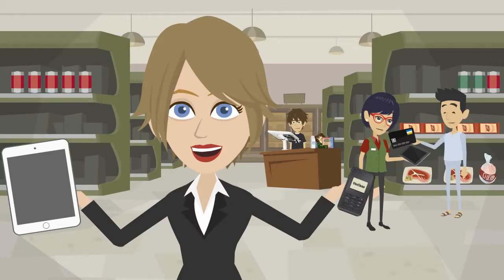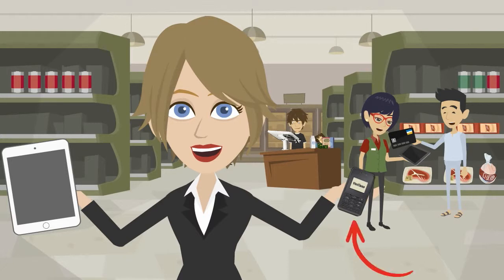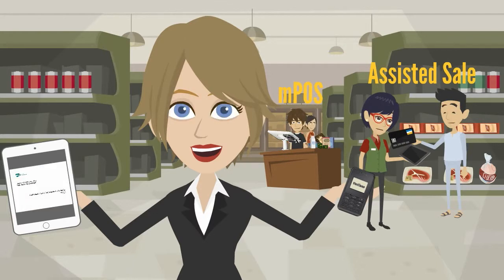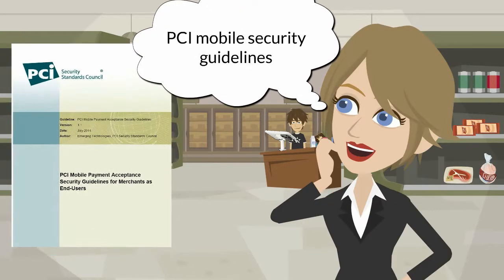Paula's challenge is to implement a mobile solution for payment and customer engagement. She has chosen a mobile payment device and a tablet that she needs to combine to enable both Assisted Cell and MPOS applications. Paula is, of course, fully aware of the PCI DSS 3.2 standard, but she needs to learn more about mobile devices and finds the PCI Mobile Payment Acceptance Security Guidelines for Merchants as End Users on the PCI Security Council homepage.